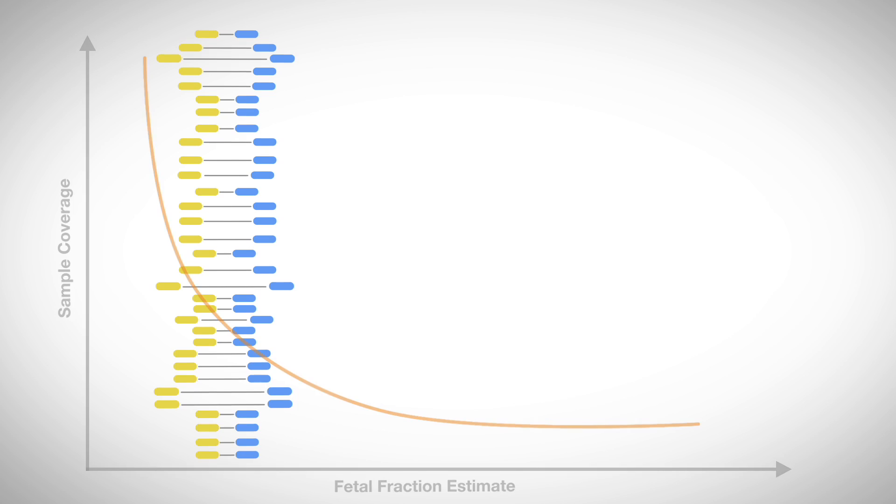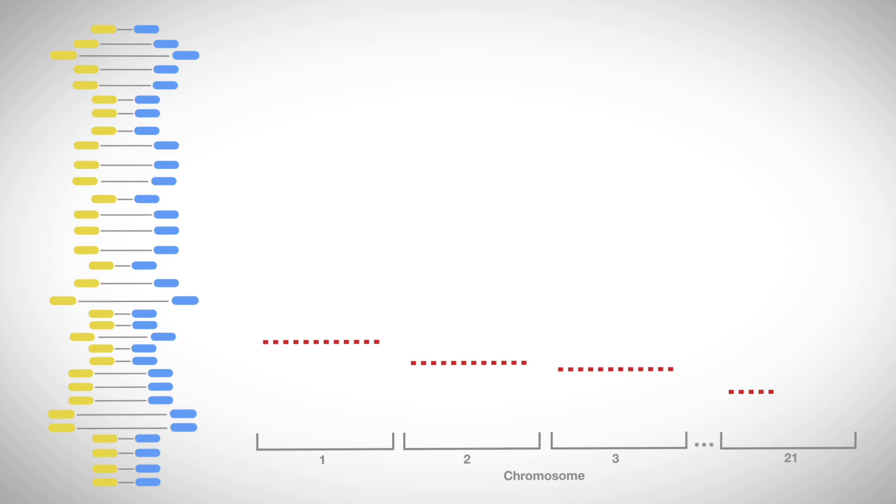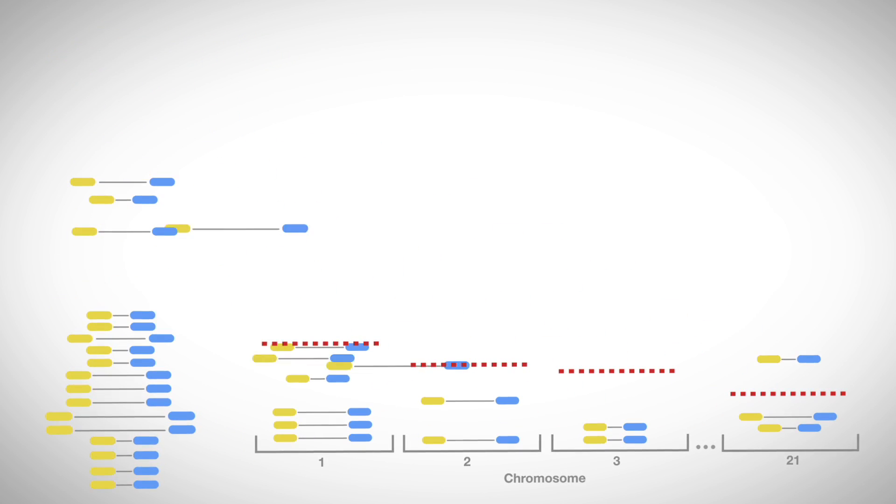Once samples pass this threshold, reads are sorted by chromosomes to look for deviations from the expected distribution.